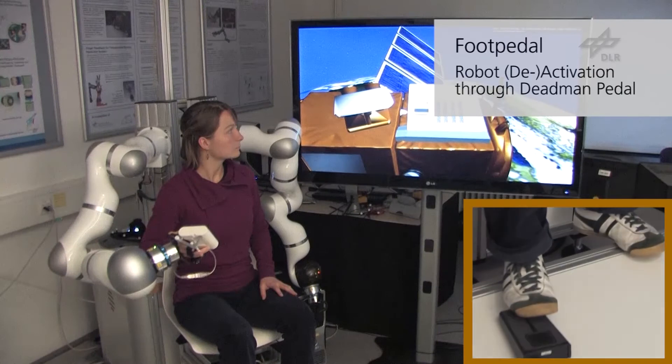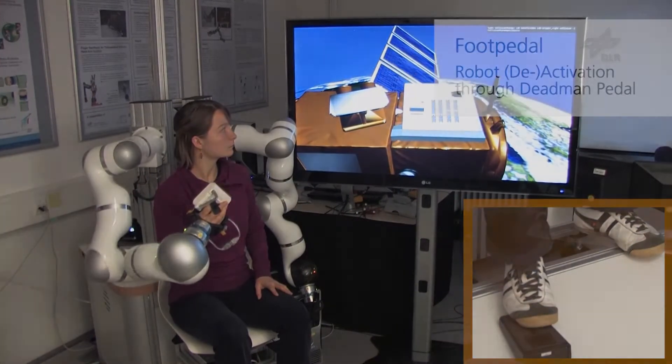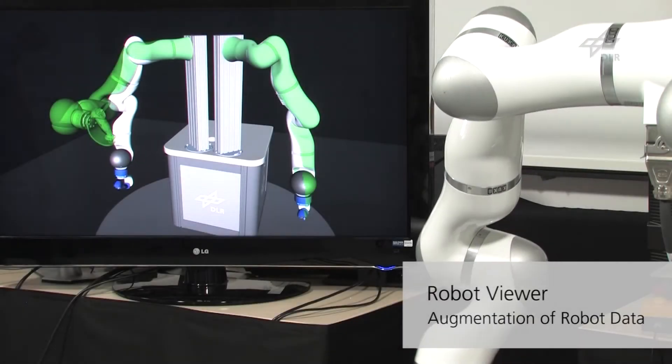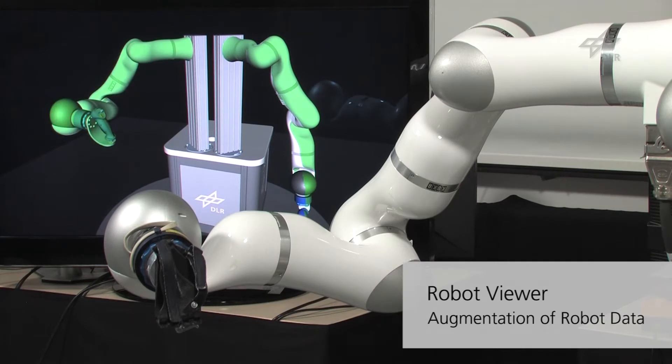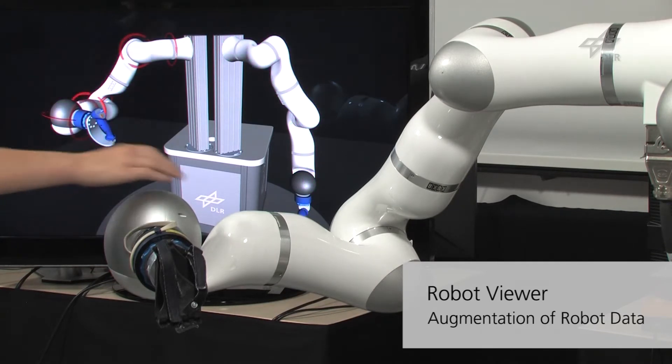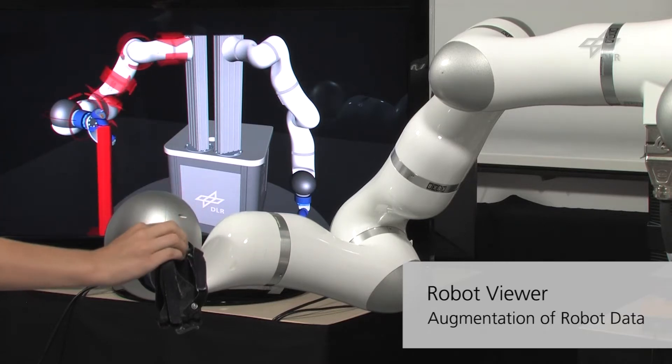As soon as the dead man pedal is pressed by the user, the human-machine interface activates. Our robot viewer augments intuitively the bimanual interfaces with user information such as the robot's target configurations and forces and torques applied on the structure and on the hand interfaces.